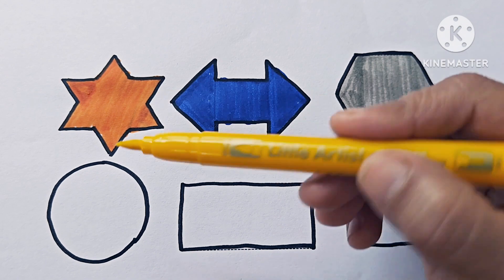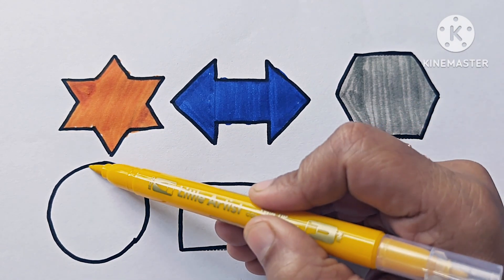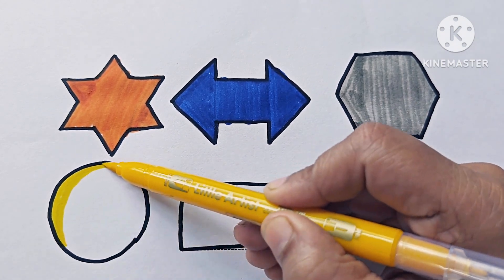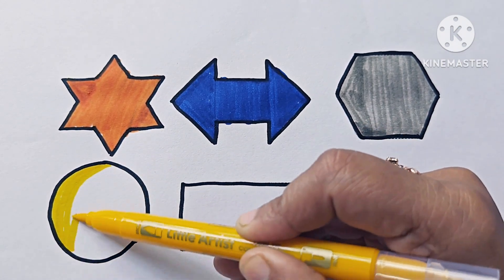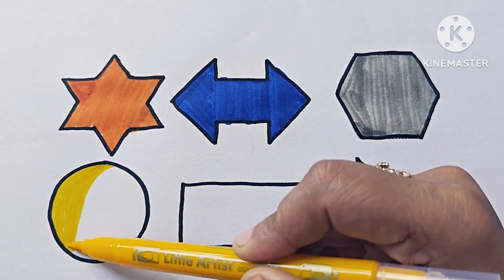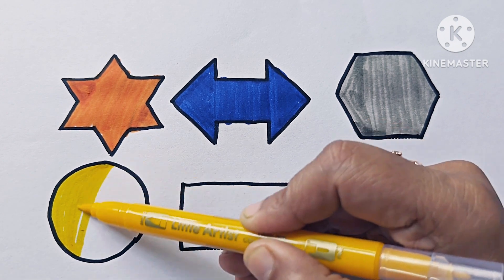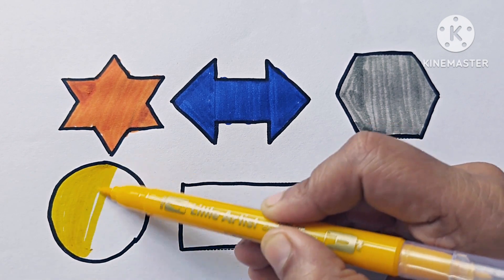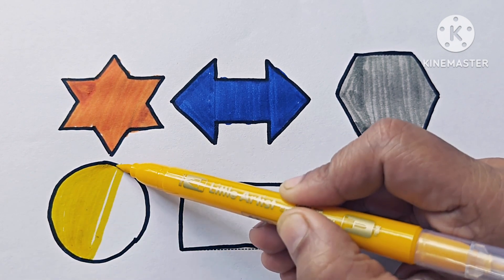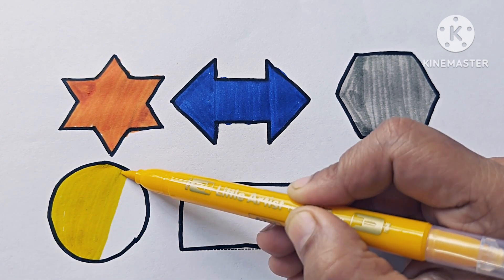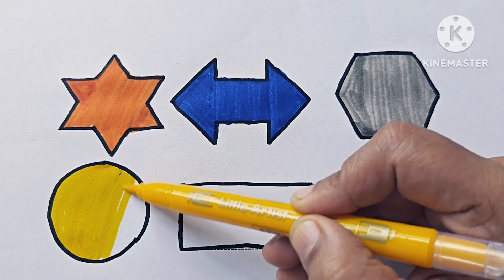Yellow color. This shape is a circle. It has no side. It is a plain surface. It is a circle.